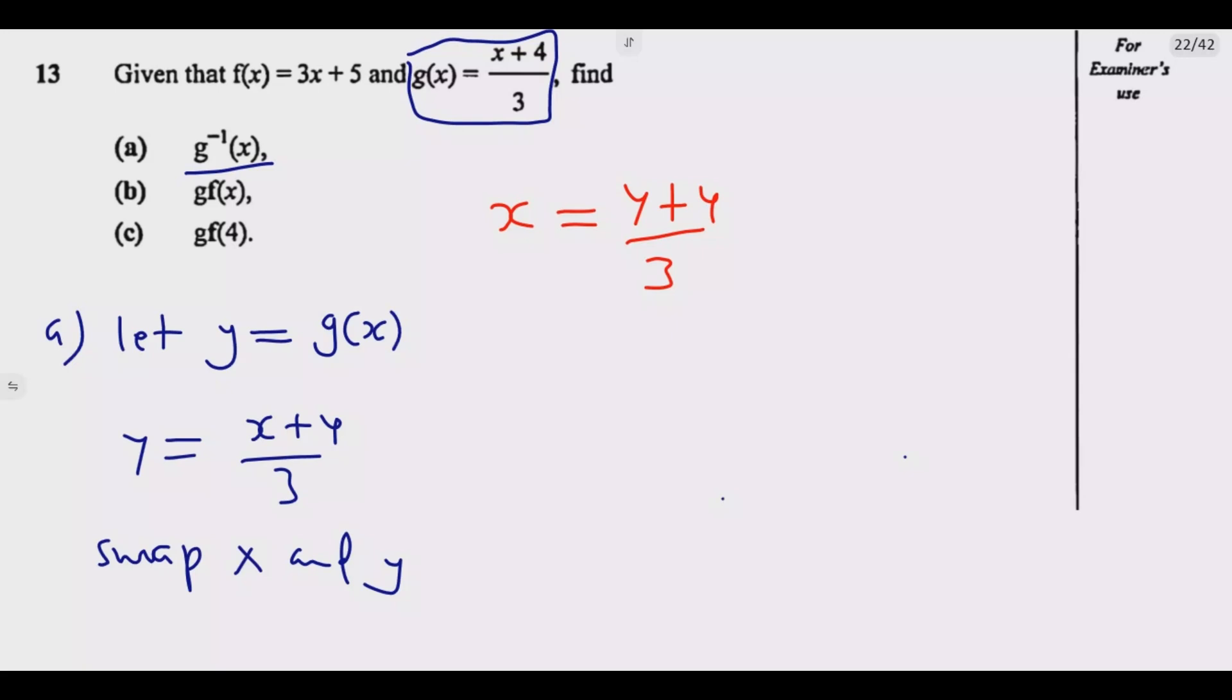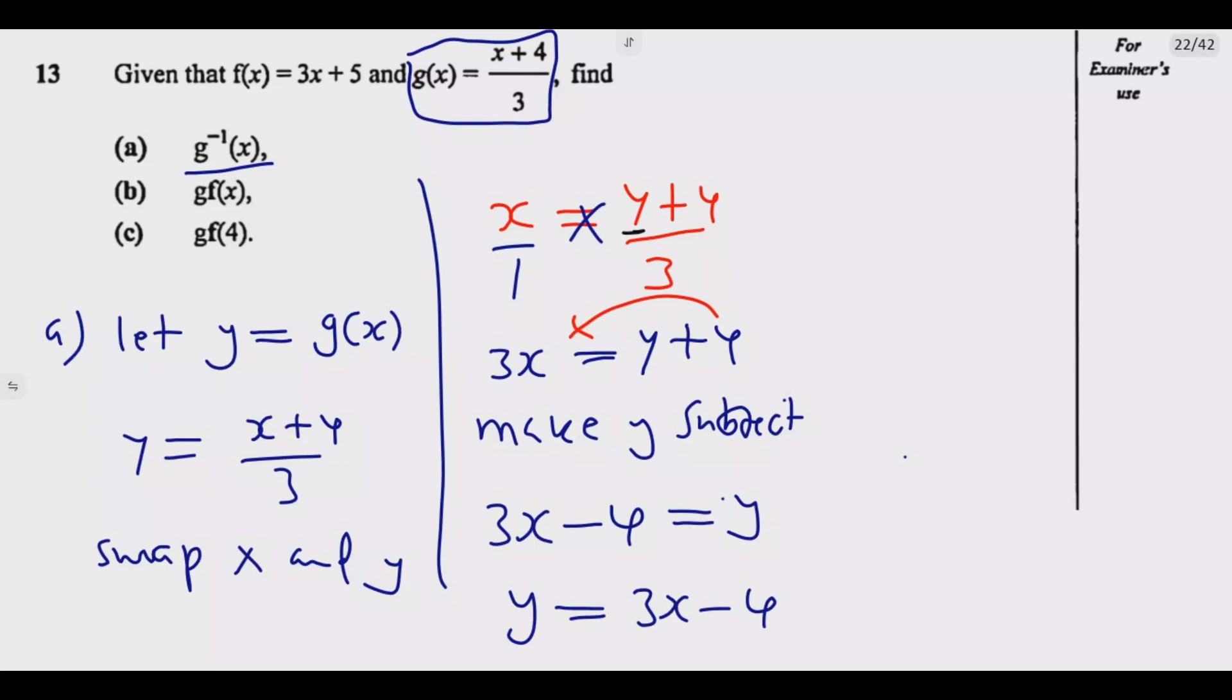Once you do that, then make y the subject of the formula. So what this tells me is, now I'm going to have this is over 1, cross multiply, 3 times x, I'm going to have 3x equals y plus 4. Then I need to make y the subject of formula. So this tells me that 3x minus 4, the moment this 4 crosses the equal sign, equals y. So meaning y equals 3x minus 4.